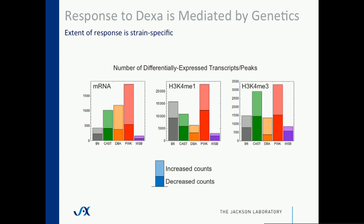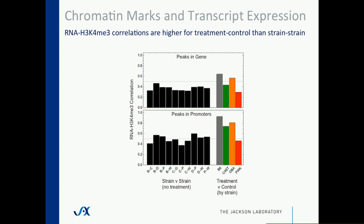We looked at how well the correlation between a transcript and its nearby peaks is reproduced across different comparisons — strain-to-strain comparisons in black, and within-strain treatment versus control comparisons. For peaks within a gene and peaks in promoters of the nearest gene, the correlation is generally higher when comparing promoter peaks to the transcript. That correlation is also higher for treatment versus control than in strain-to-strain comparisons; for example, in black 6 that's about a 0.92 correlation. This suggests there are more ways to break the transcript-chromatin correlation through genetics than through treatment response within a given strain.